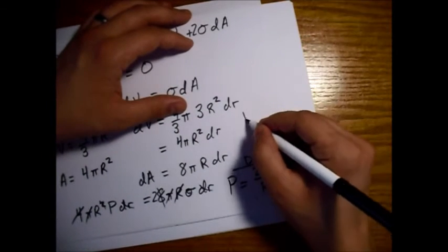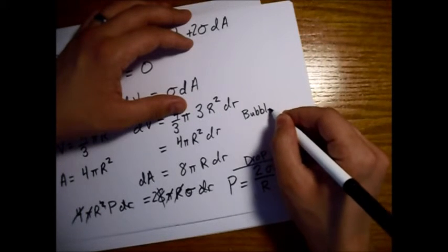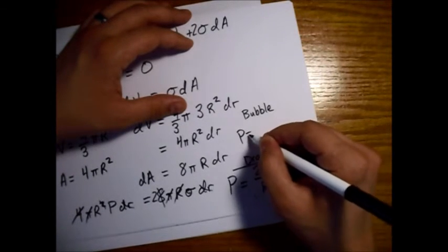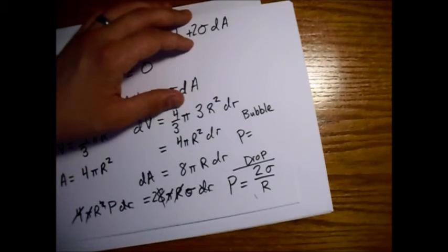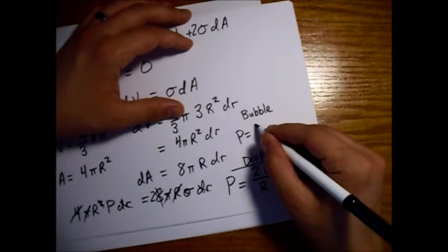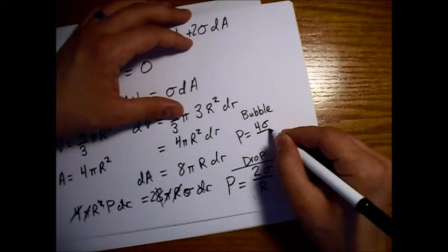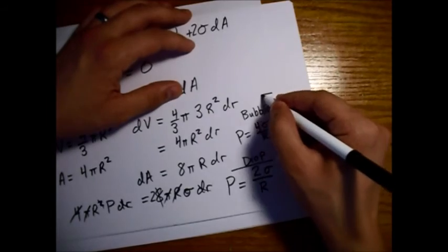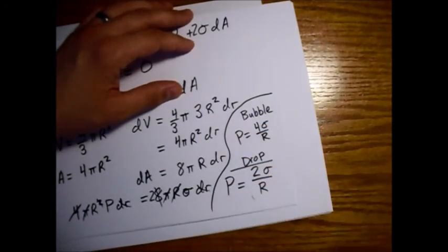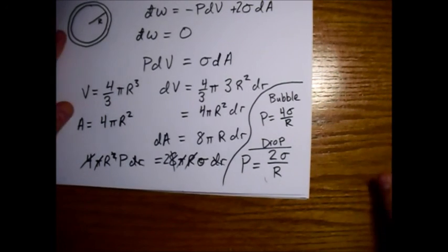So this is a drop, and for a bubble the additional pressure in addition to atmospheric pressure would be four sigma over r. So there we go.